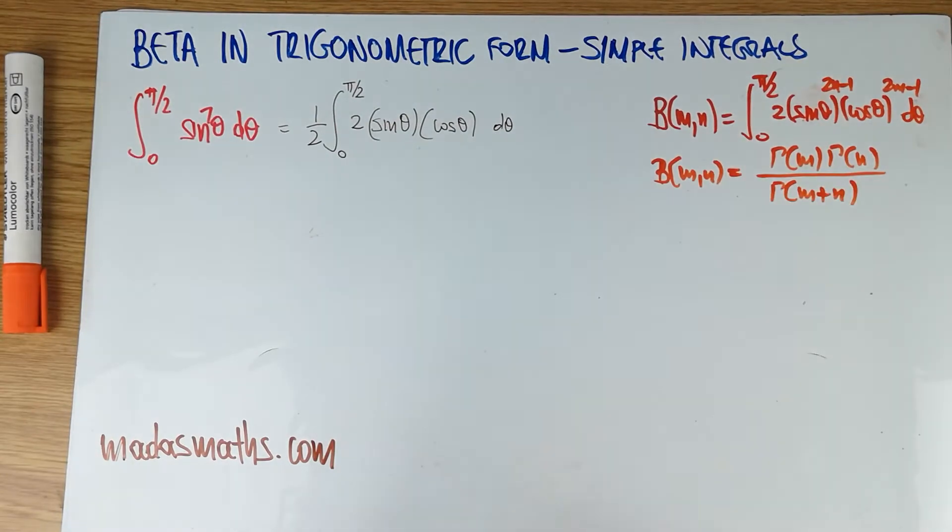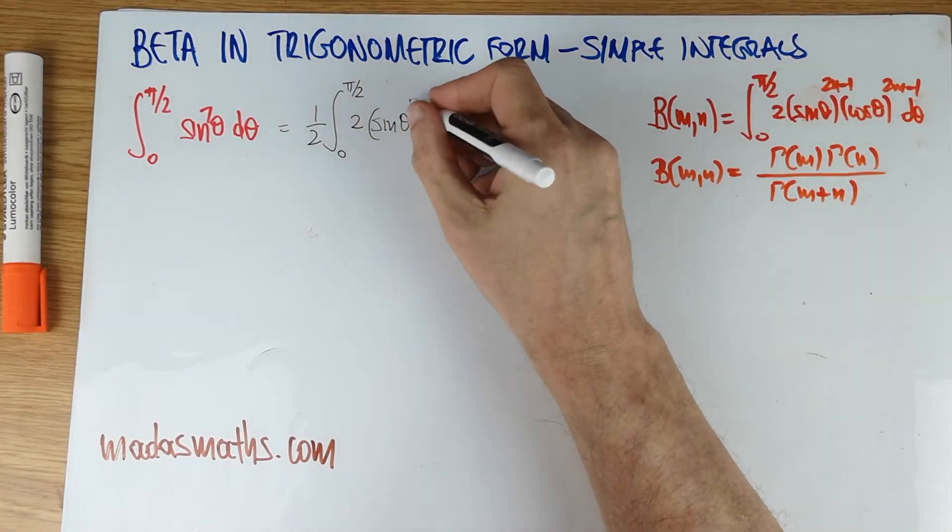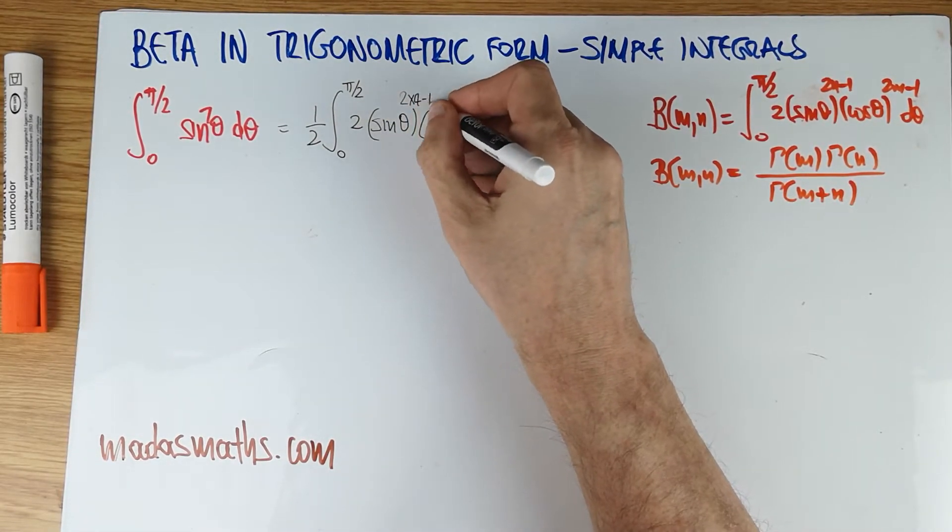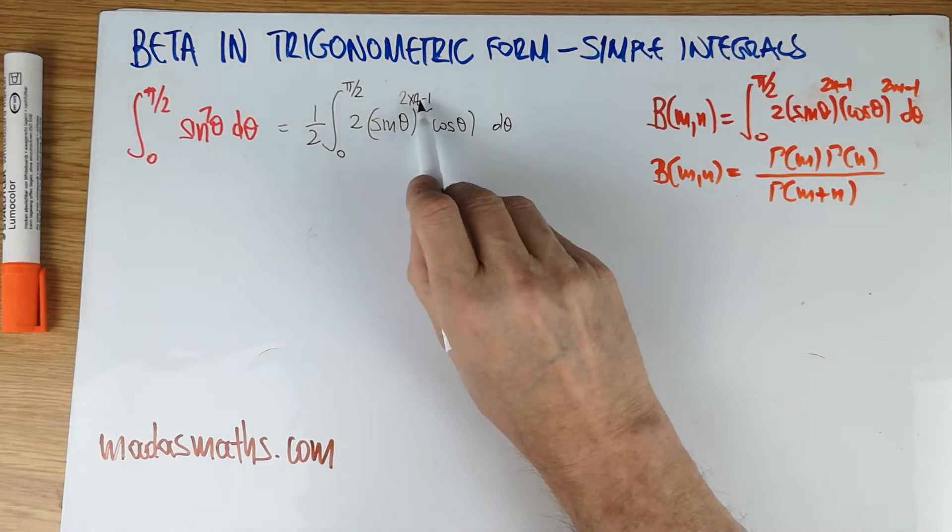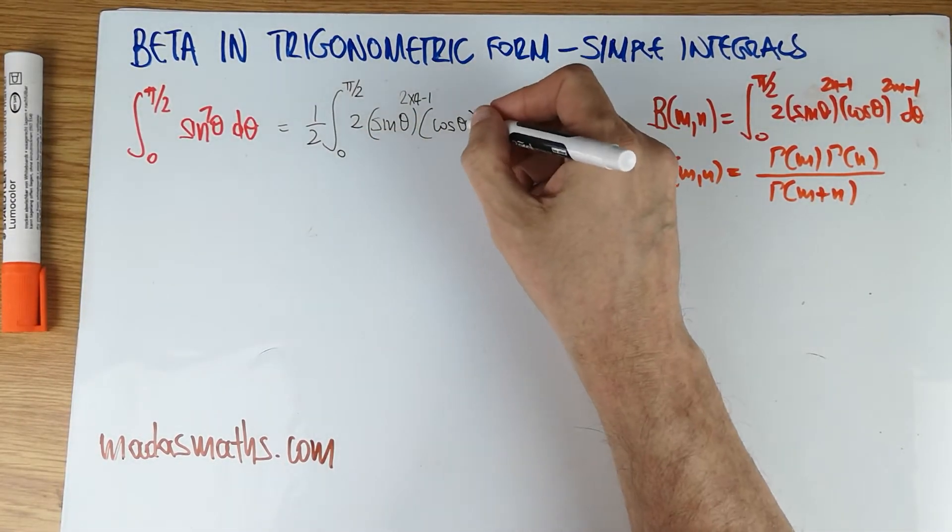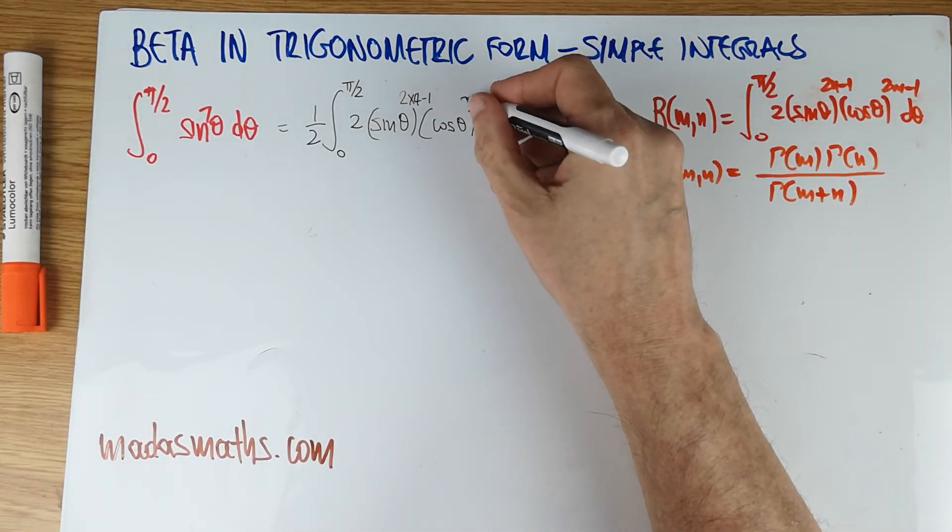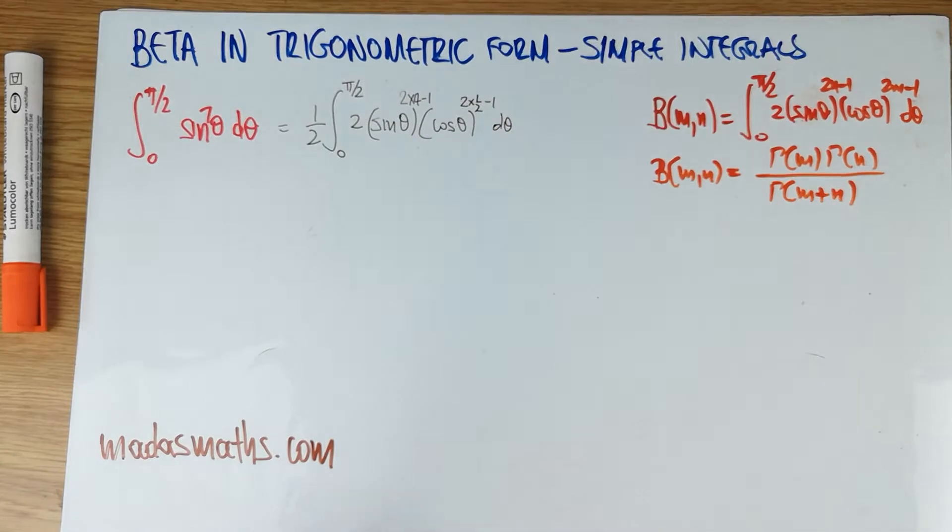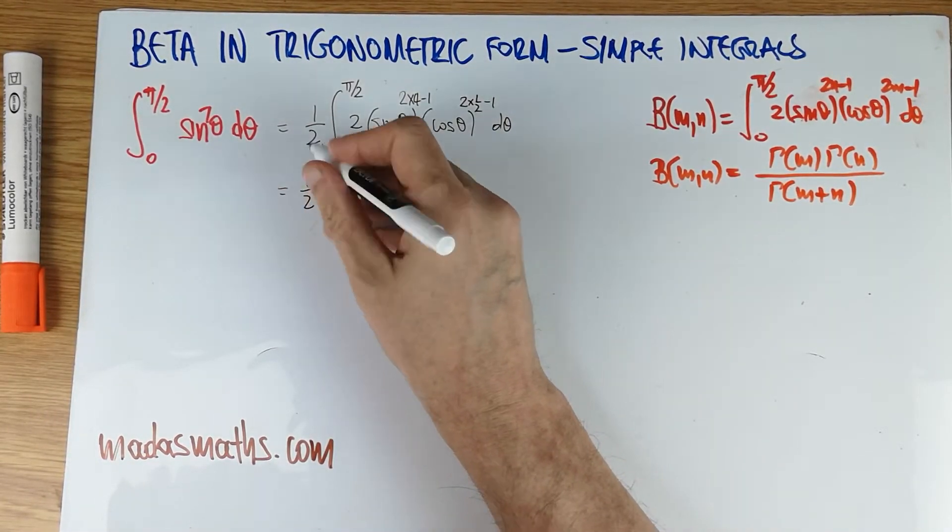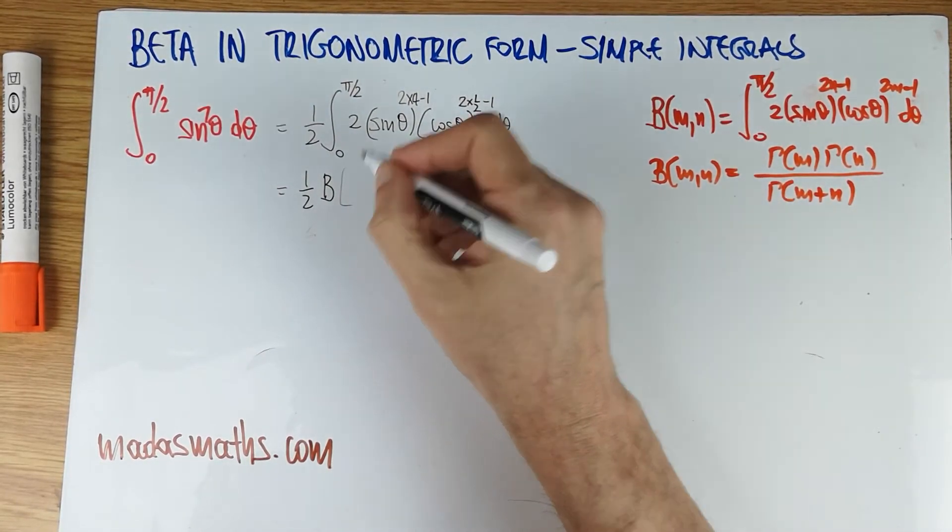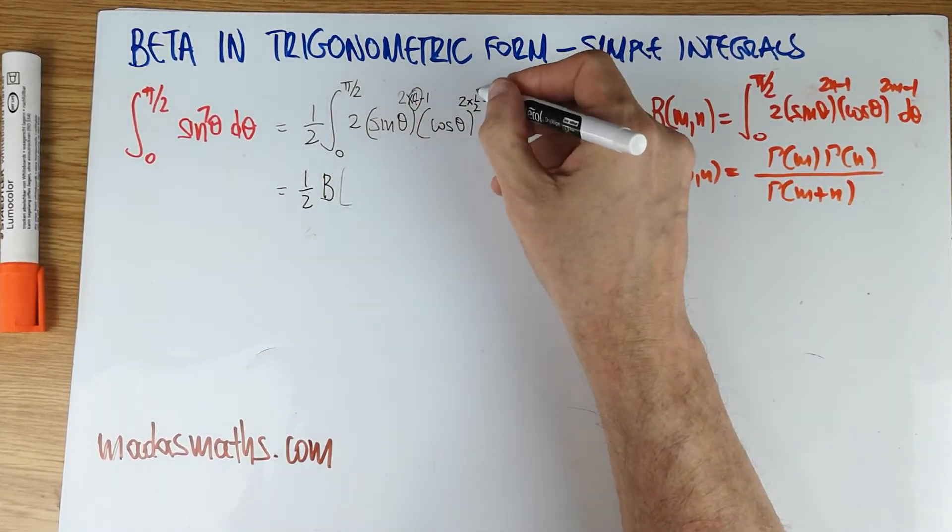And somehow, when I double something and take away 1, I'm going to get a 7. So that's a 4. So that is 2 times 4 minus 1. That's my power of 7. So it matches that. And of course, for the cos, it should be obvious, it's still like 2 lots of half, take away 1. So this now, the half is of course at the front, is by definition, the beta of this 4 and this half.